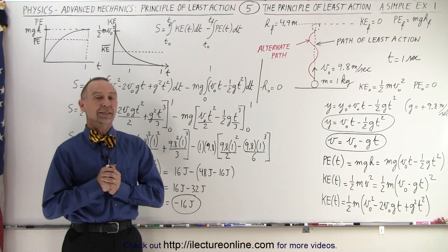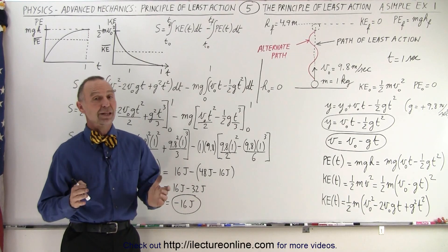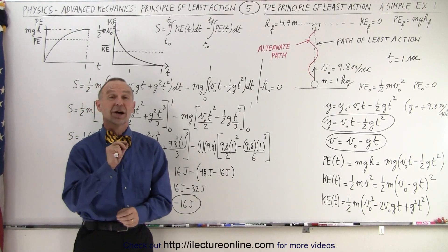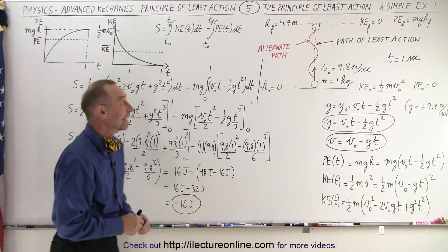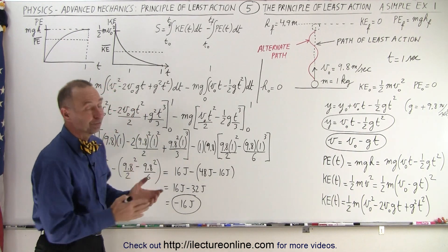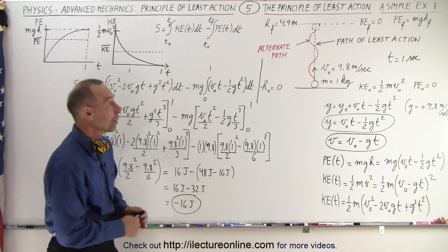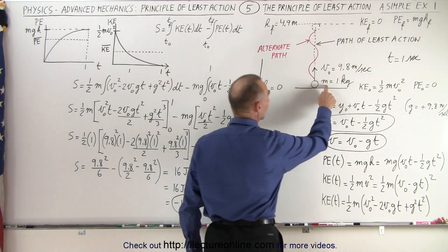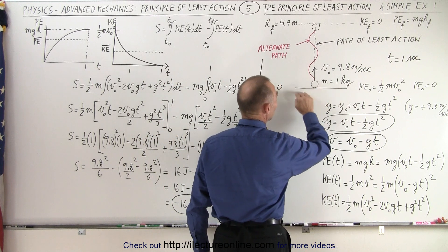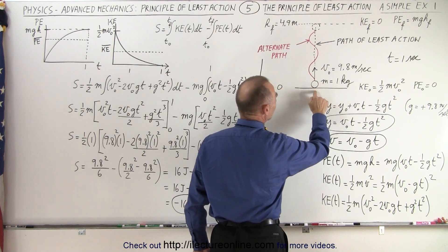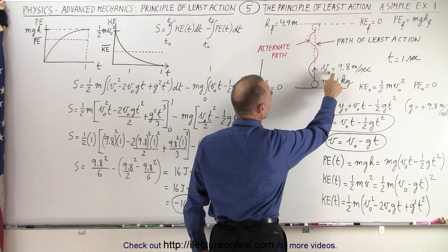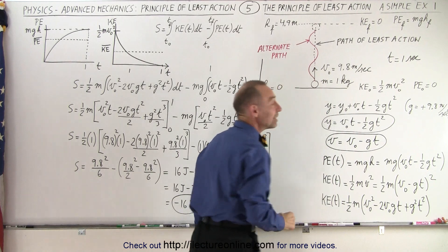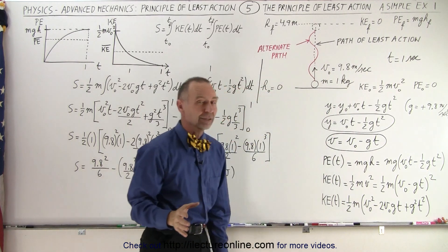Welcome to our lecture online. Now we're ready for a simple example of how to calculate the action. We have a small object with a mass of 1 kilogram that's on the ground, starting upward with an initial velocity of 9.8 meters per second.